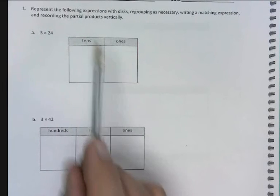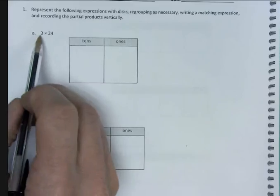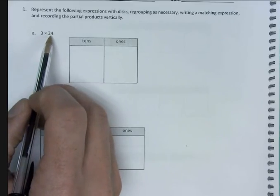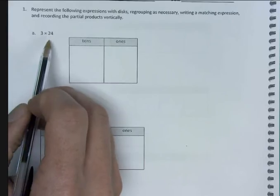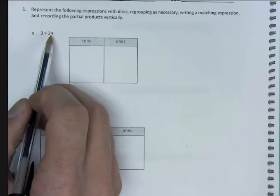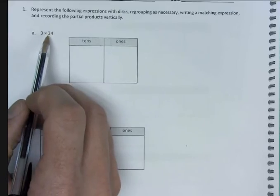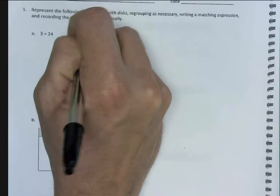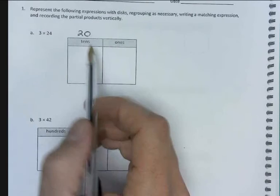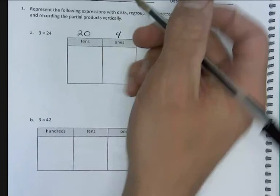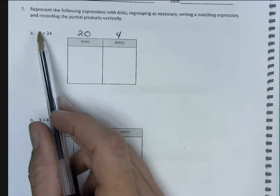So if we look at our first problem, we have 3 times 24. You may remember from our homework the last two nights, we were distributing our 3 across two smaller numbers. So we're going to break this 24 apart by place value. We have two tens, so that's going to be 20. We'll put it up here. We're going to have four ones, so we put that above our ones place.